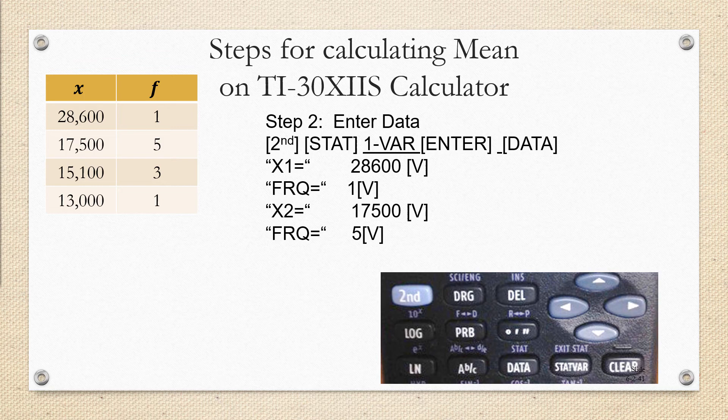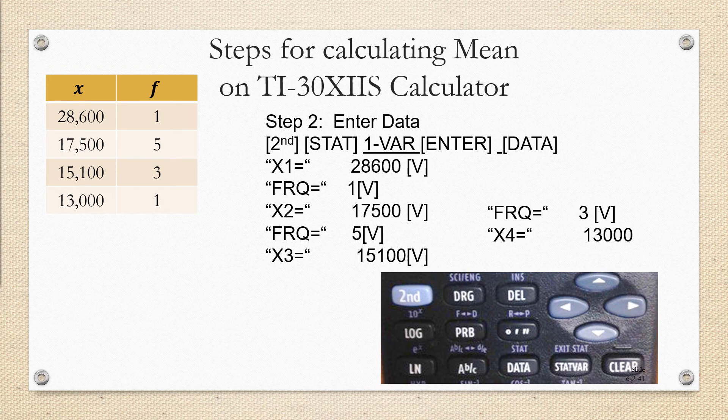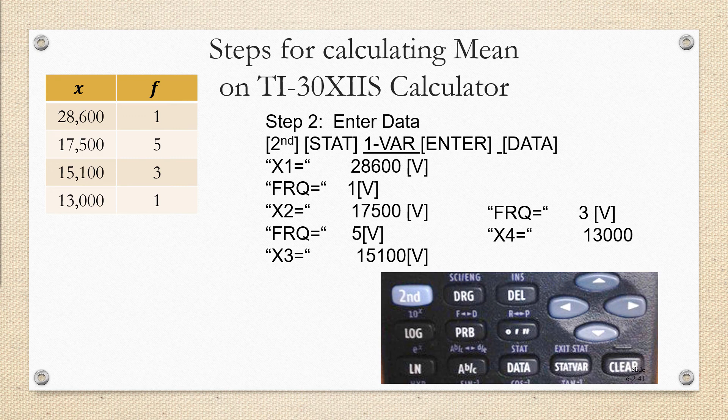Then you'll be asked for x2, the second data value. You'll enter 17,500, arrow down, and then you're going to be asked for the frequency of x2, which is 5. The calculator will show a 1. All you have to do is type 5, and it'll replace it. Then you arrow down again. Next, you're going to be asked for x3, which is the third data value of 15,100. This data value has a frequency of 3, so when you arrow down, you're going to enter a frequency of 3. Then arrow down again to enter x4, which is 13,000. You don't have to arrow down again because the frequency of 13,000 is 1, and your calculator will automatically assume the frequency is 1 if you don't change it.